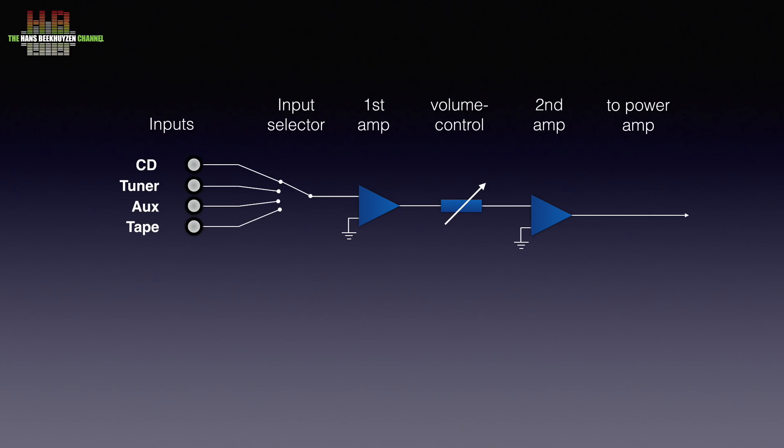In a stereo amplifier there are two of these circuits, one for the left and one for the right channel. And of course the input selector and the volume controls are coupled between the channels.